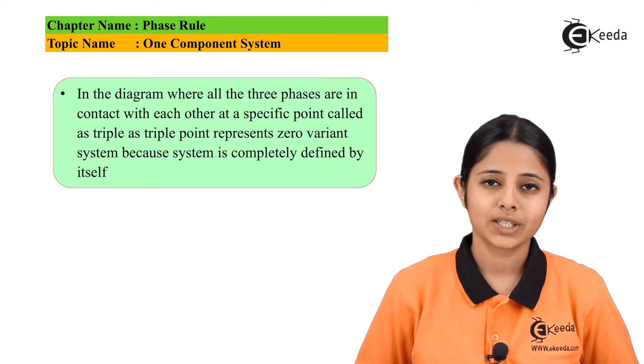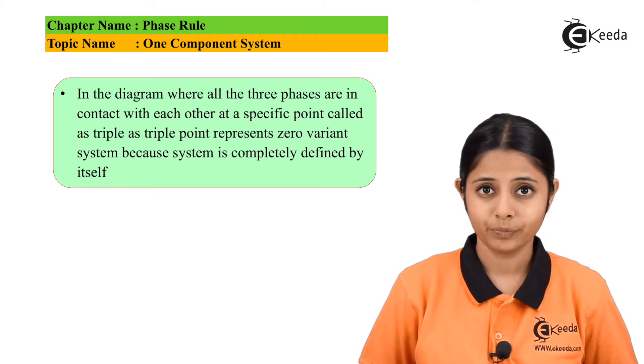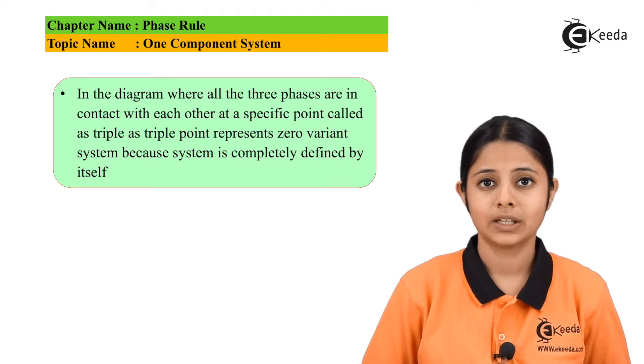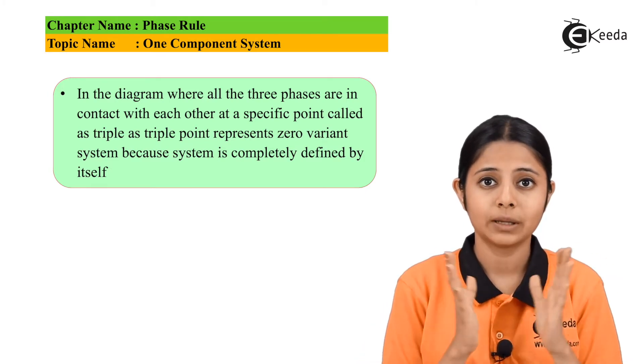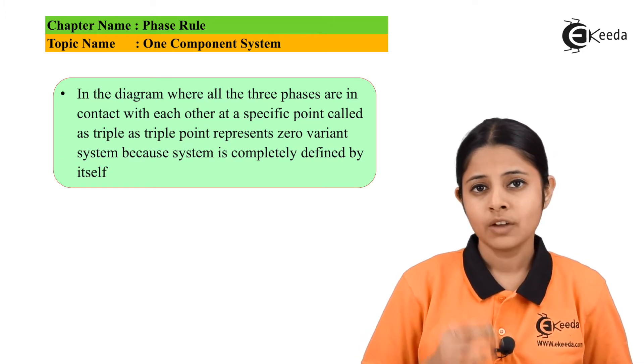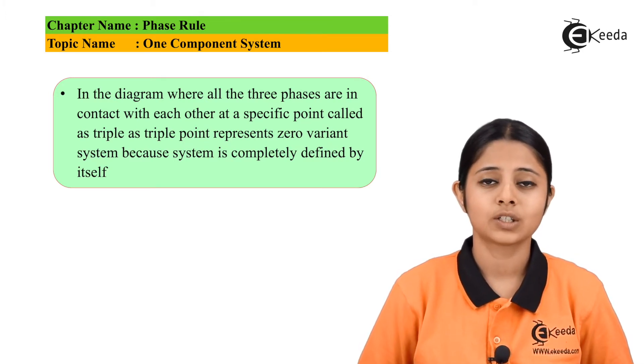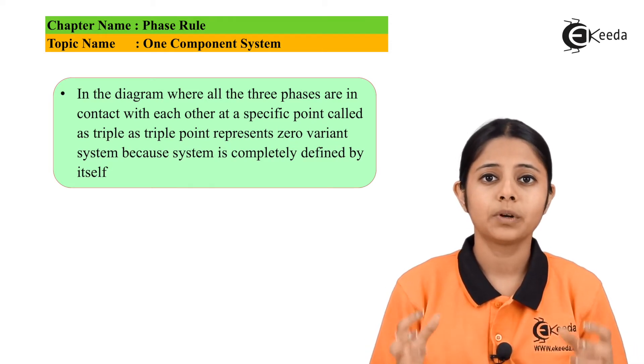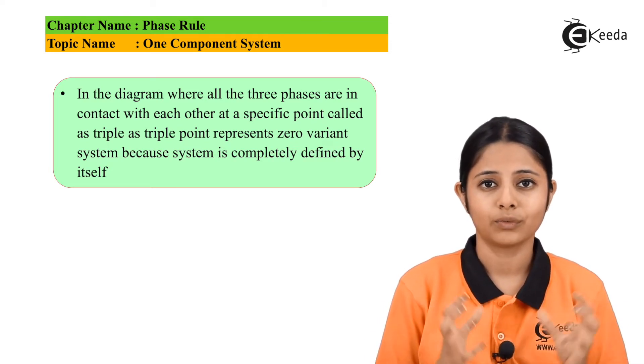In today's session, we studied about the one component system. We studied what exactly is one component system, the temperature and the pressure, and how temperature and pressure affect the equilibrium points of the one component system. We also studied the triple point and how triple point is zero variant and nothing can affect it.